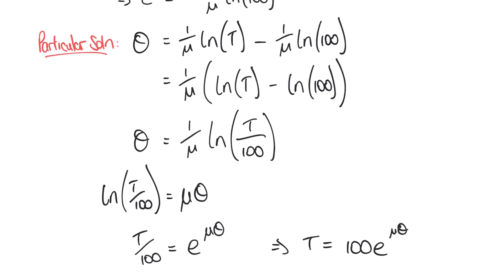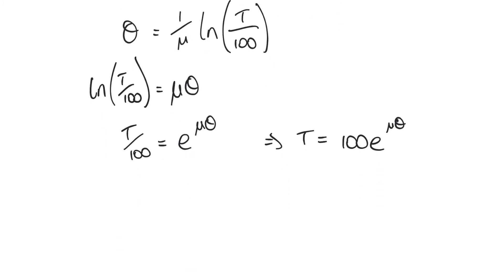So returning to the question again, part a, we were asked to determine the tension T when the angle was two radians and the coefficient of friction was 0.25. Well, we've done the difficult work here, because we have our expression in terms of T equals. And so now when we substitute our values in for the angle theta and the coefficient of friction μ, we see something like this: 100e to the power of 0.25 times 2, and that gives us a result of 164.872 newtons.